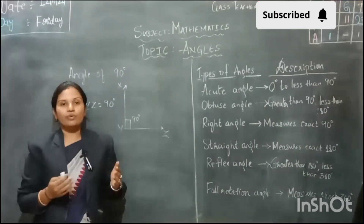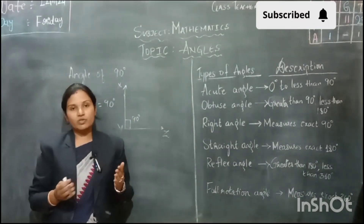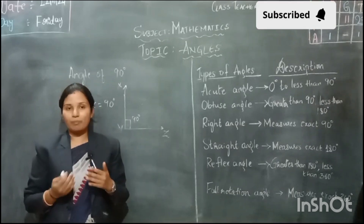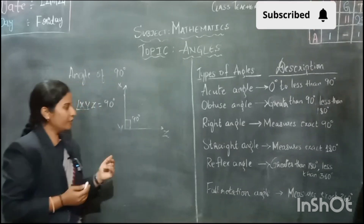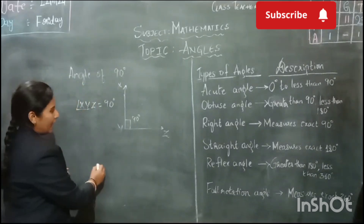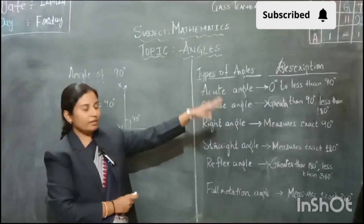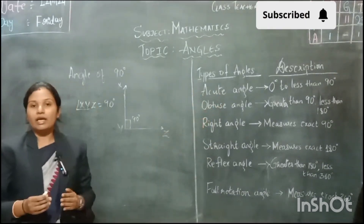In a similar way, we can measure all other angles. For example, for an obtuse angle, if we get an angle which measures greater than 90 degrees and less than 180 degrees.